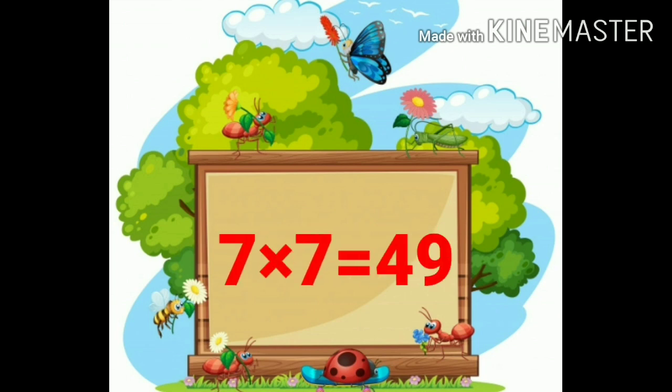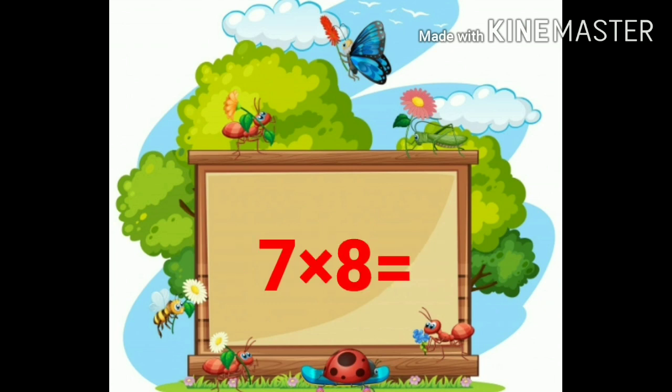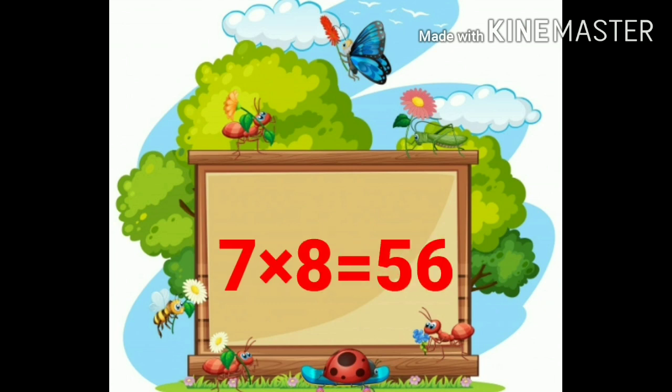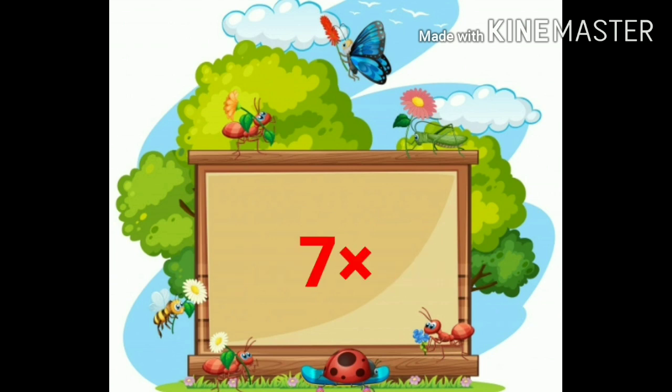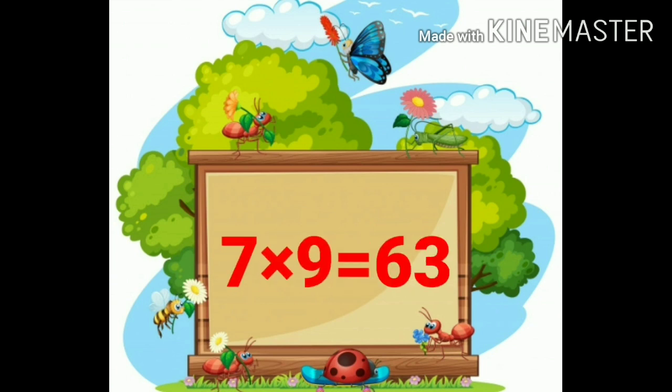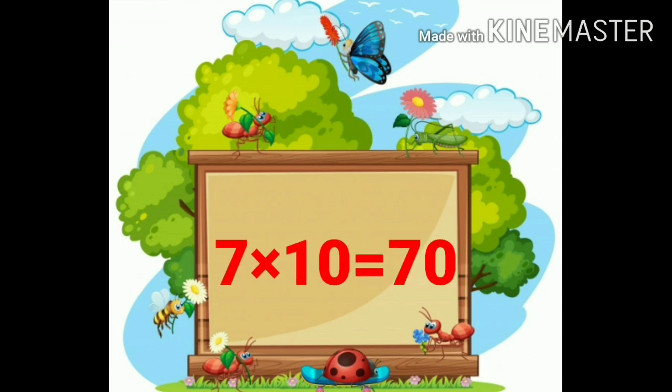Seven sevens are forty-nine. Seven eights are fifty-six. Seven nines are sixty-three. Seven tens are seventy. Again we learn the table of seven.